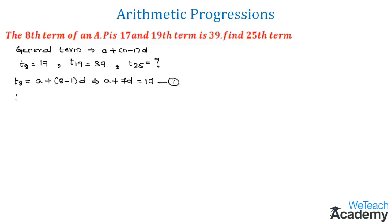Similarly, let us find the T19 term. We get a plus (19 minus 1) times d. This would come as a plus 18d. The value of the 19th term is given as 39, so let us equate this to 39. Now assume this as equation 2.